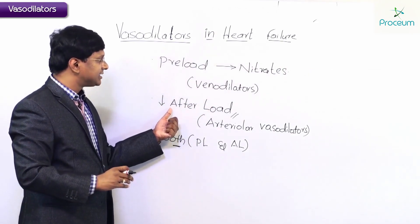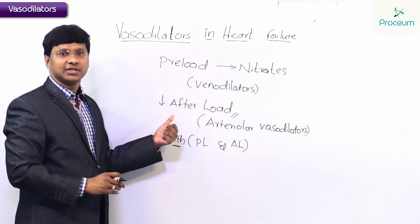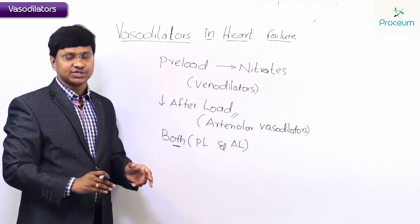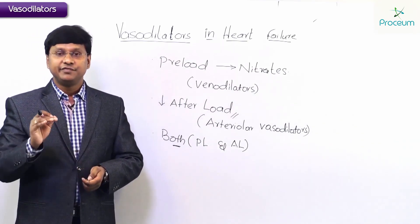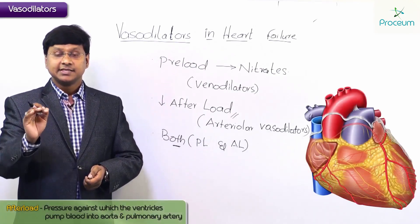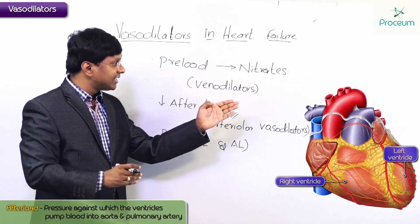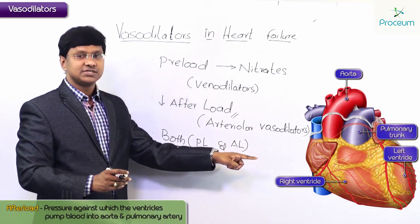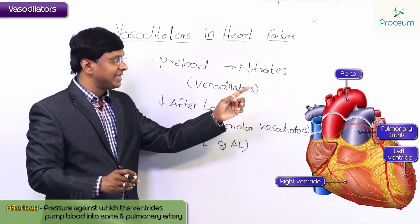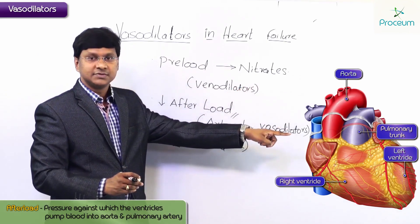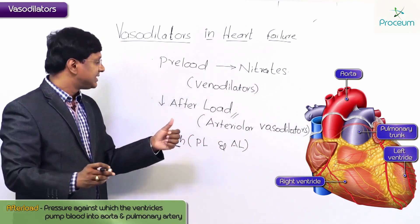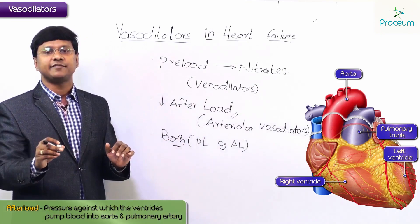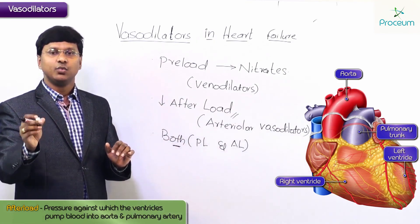The drugs which reduce the afterload are preferentially arteriolar dilators. Afterload is defined as the pressure against which the ventricles have to pump blood into the aorta and pulmonary artery. If the pressure exerted by the left ventricle on the aorta is reduced, the afterload is reduced, and oxygen demand by the heart will also be reduced.